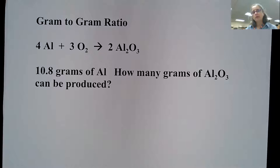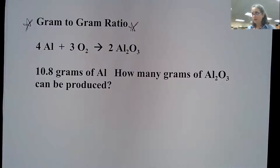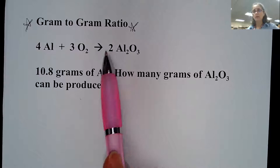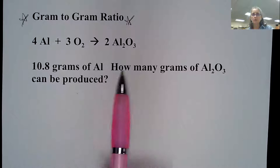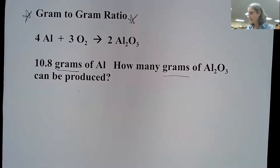This video is going to look at a stoichiometry problem called gram to gram. This is going to be the most common kind of calculation we'll do, because we don't have instruments that measure in the mole — we have instruments that measure in grams. So this is what chemists use most often. It's called a gram to gram because you're starting with grams and ending with grams.